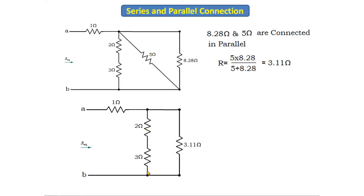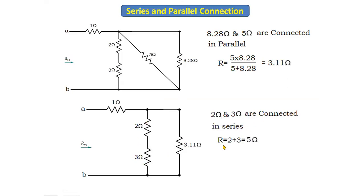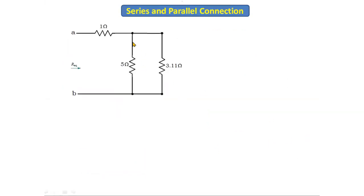Now the 2 ohm and 3 ohm resistors are connected in series. Using the series formula, R = 2 + 3 = 5 ohms. We replace these two resistors with 5 ohms.